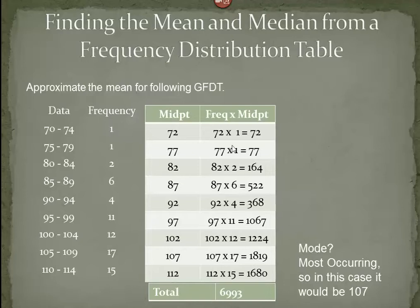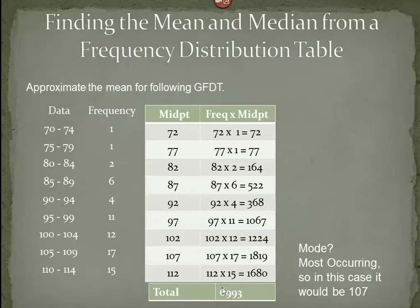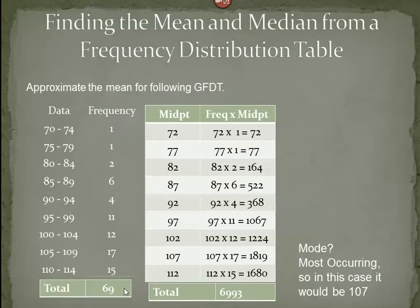As you're entering these into your calculator, you can put pluses in between all these multiplications — go 72 times 1 plus 77 times 1 plus 82 times 2 plus 87 times 6, and so on through all of the numbers, multiplying all the midpoints by their respective frequencies. Then at the very end hit equals and that should be your total. Then we want to divide this total by the total number of values, which equals the sum of our frequencies.